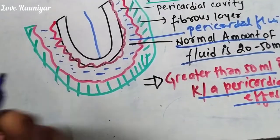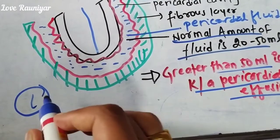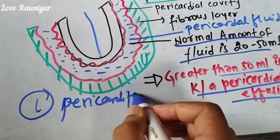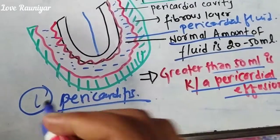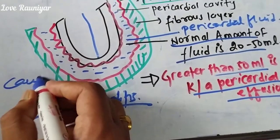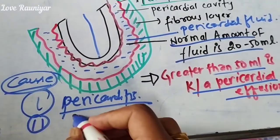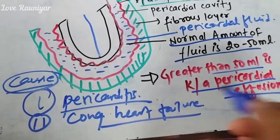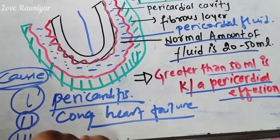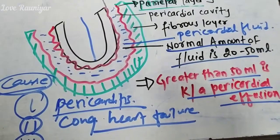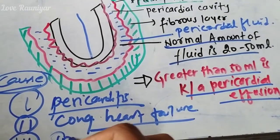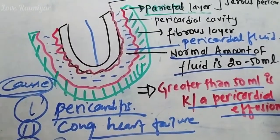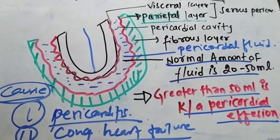Now, what are the causes of pericardial effusion? First and foremost, remember that all types of pericarditis are associated with the development of pericardial effusion. The second cause is congestive heart failure. The third cause is trauma — due to trauma or related conditions, pericardial effusion can also develop.